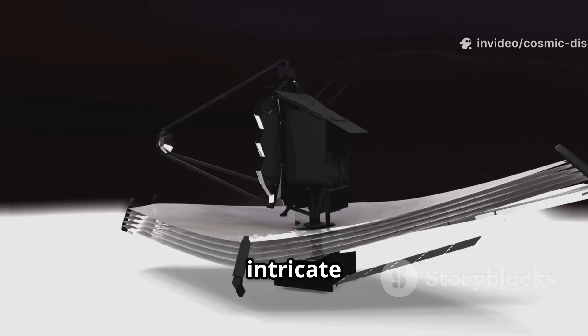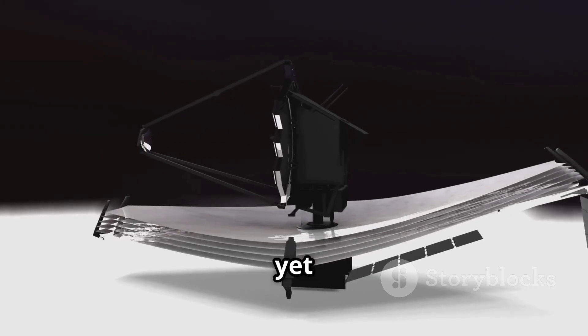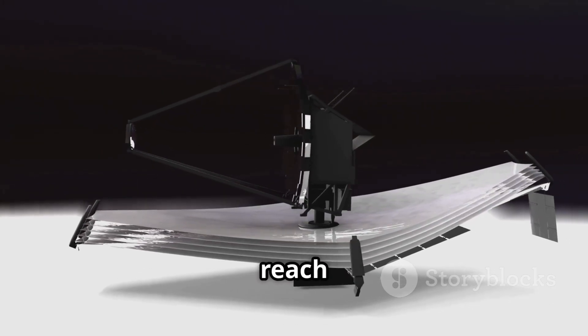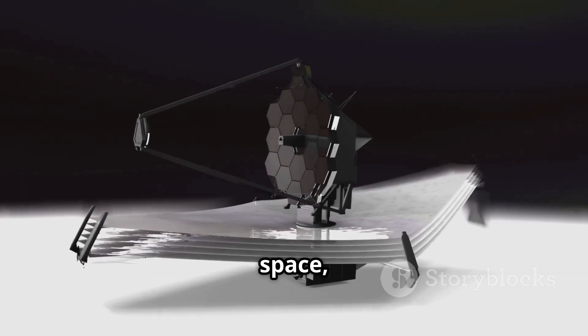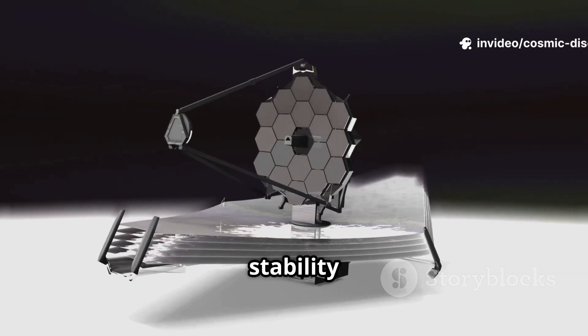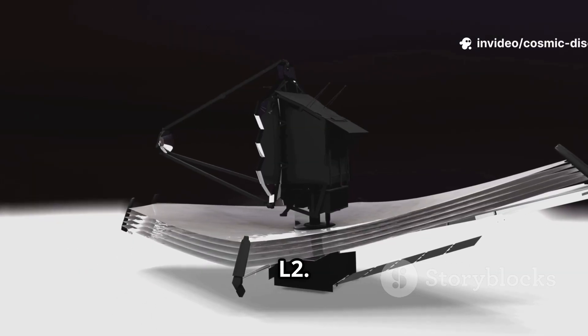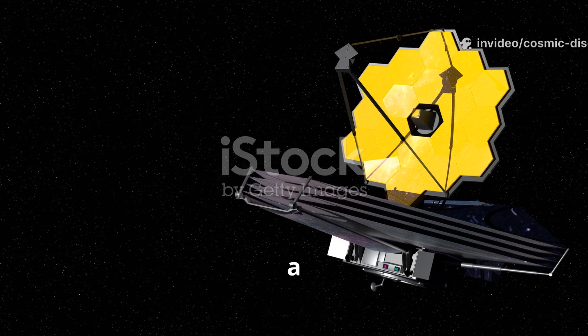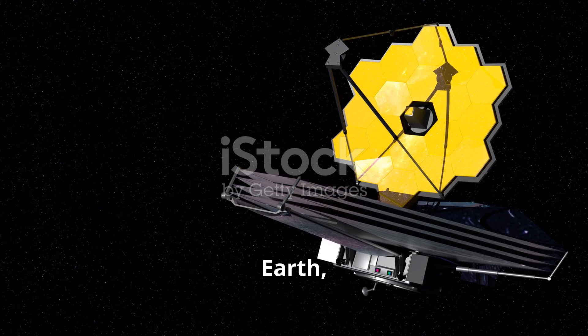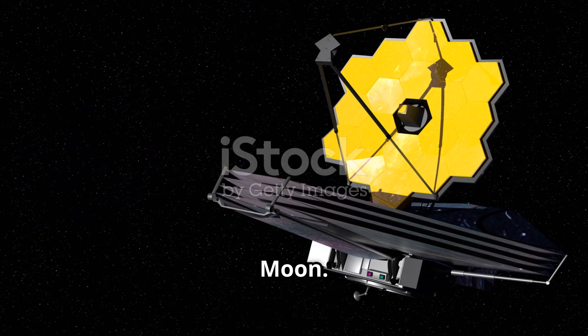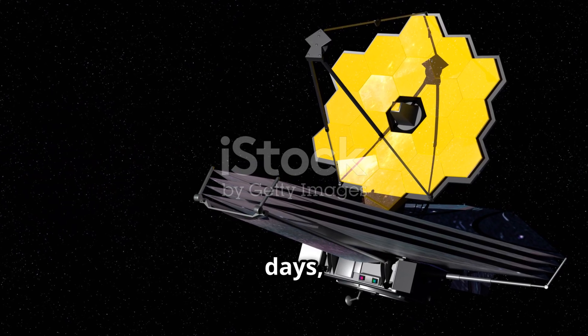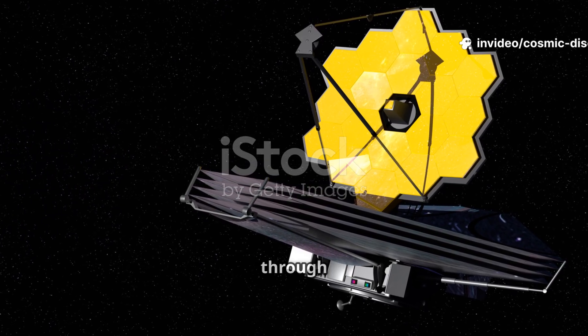The most dangerous and intricate part of its mission was yet to come. It had to reach a very special place in space, a point of gravitational stability known as the second Lagrange point, or L2. This location is about one and a half million kilometers away from Earth, four times farther than the Moon. For the next 30 days, the telescope traveled through the void.